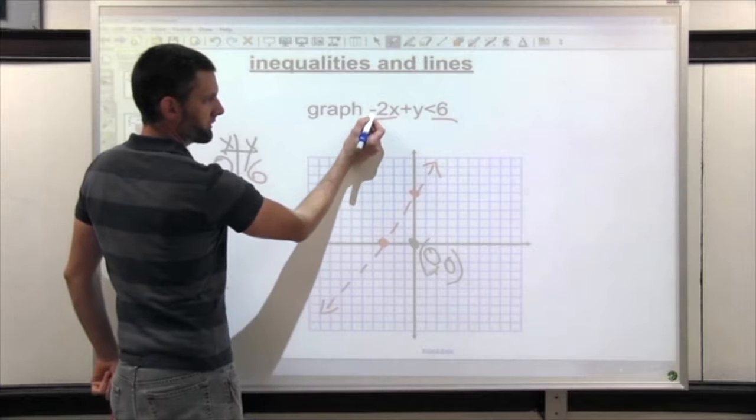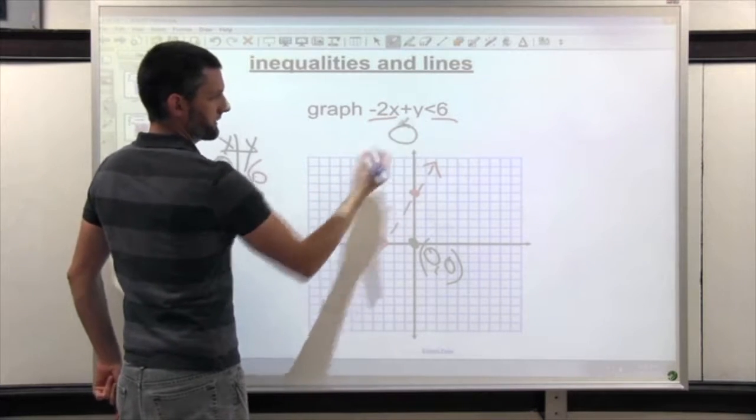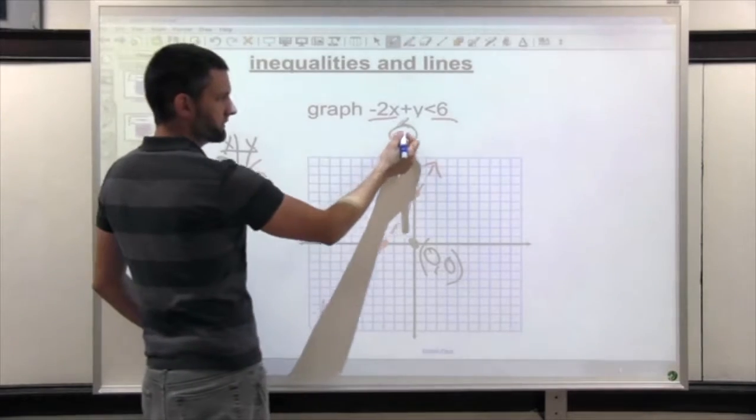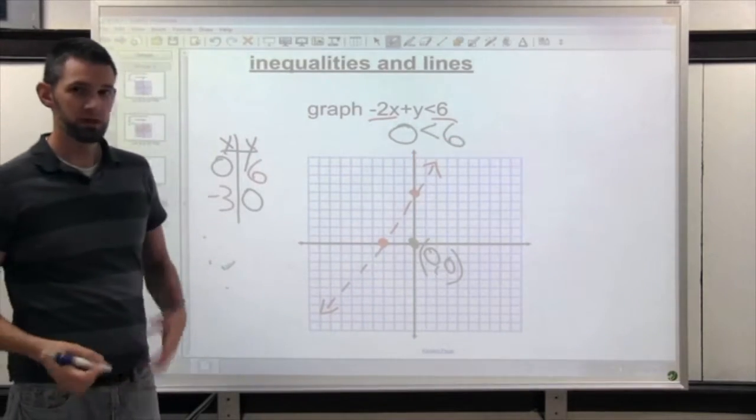Why is 0, 0 easy to work with? Negative 2 times 0 plus 0 just makes 0. Is 0 less than 6? Yes, it is.